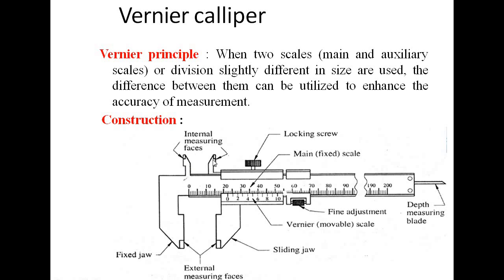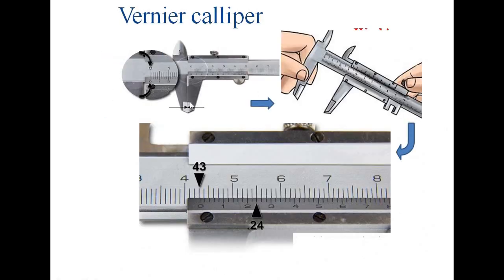In construction, there are two internal measuring faces — used when measuring a hole or inside diameter. There is a fixed jaw and a sliding jaw; when measuring external dimensions like diameter and length, the external measuring faces are used. There is a lock nut to lock and maintain the reading. There is a movable scale, a fine adjustment screw, and a depth measuring blade used to find out the depth of any object within a limit of 100 mm or 200 mm.